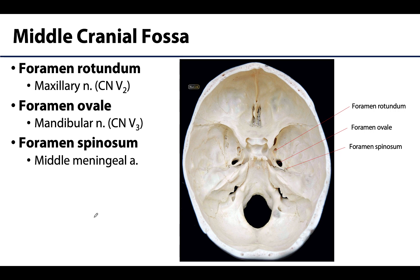Continuing with the middle cranial fossa, three more foramina are important. The foramen rotundum — a nearly perfect circle — is where V2, the maxillary nerve, exits the skull. The foramen ovale — more oval-shaped and slightly larger — is where V3, the mandibular nerve, exits; it is larger because V3 is larger. Lastly, the foramen spinosum, a small pinprick of a foramen posterolateral to the foramen ovale, allows the middle meningeal artery to enter the skull to supply the meninges and is clinically relevant in cases of epidural hemorrhage.